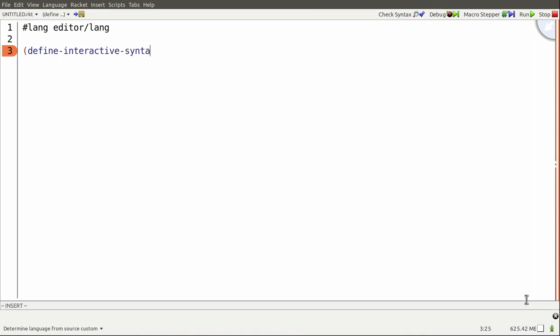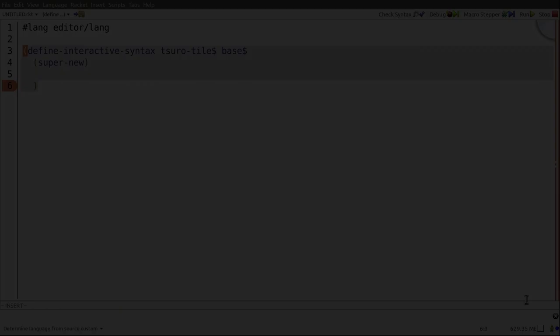An interactive syntax extension is composed of four parts. First, a state. Second, a view. Third, an event handler. And fourth, a code generator.